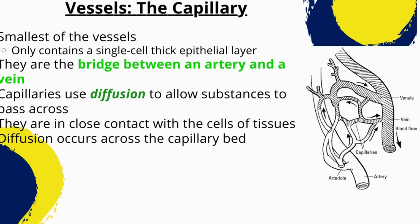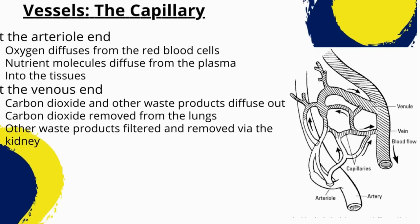Capillaries are also involved in the regulation of blood flow and the control of blood pressure. The smooth muscle cells in their walls can constrict or dilate to regulate blood flow, and capillary pressure helps control pressure throughout the circulatory system. At the arterial end, oxygen diffuses from red blood cells and nutrient molecules diffuse from the plasma into the tissues. At the venous end, carbon dioxide and other waste products diffuse out — carbon dioxide is removed via the lungs, and other waste products are filtered and removed via the kidneys.